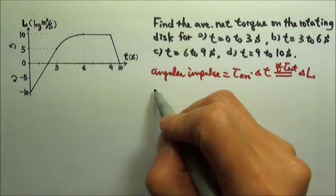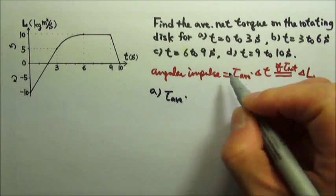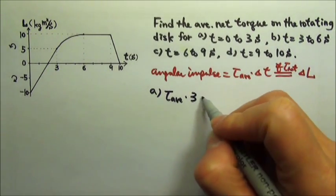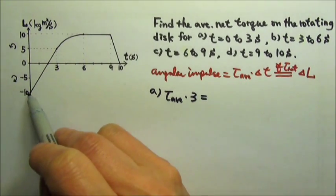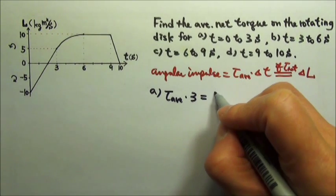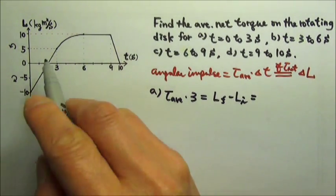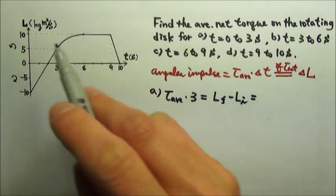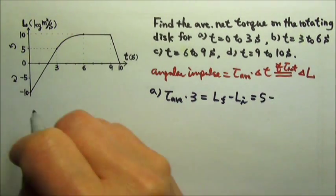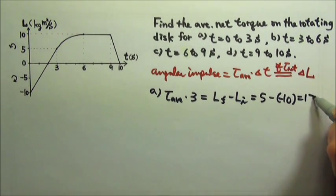So for part A, zero to three seconds, the average torque is what we're looking for. Zero to three seconds, that would be three seconds for delta T. And from zero to three seconds, the delta L is the final minus the initial. What is the final angular momentum? It's five and the initial is negative 10. So we get 15.